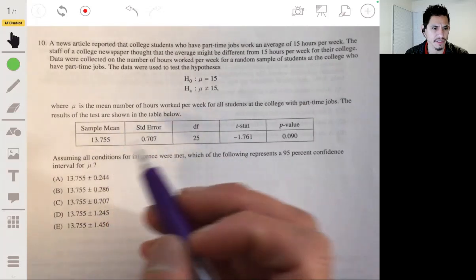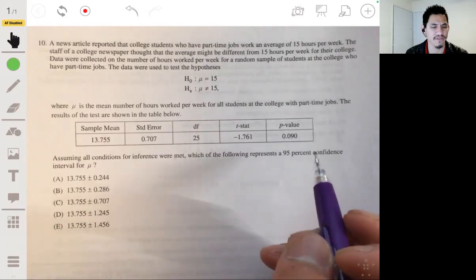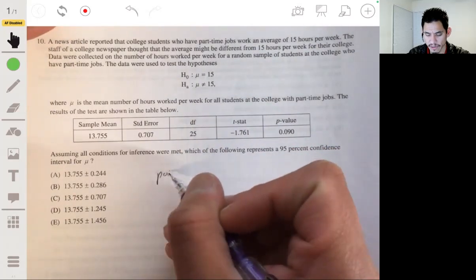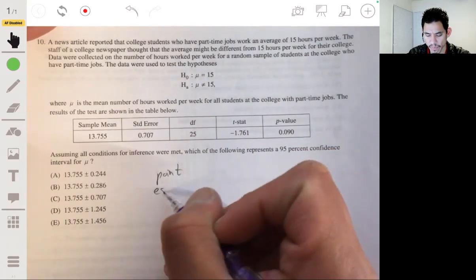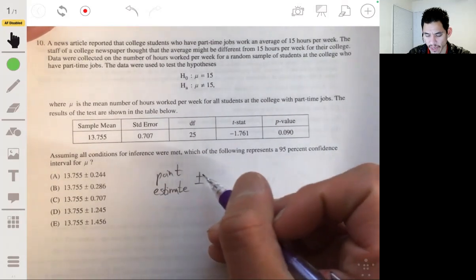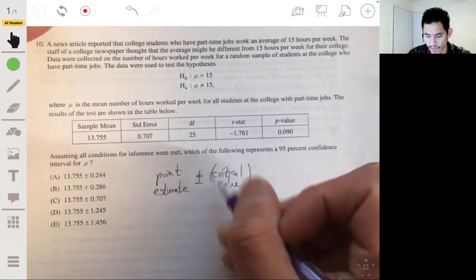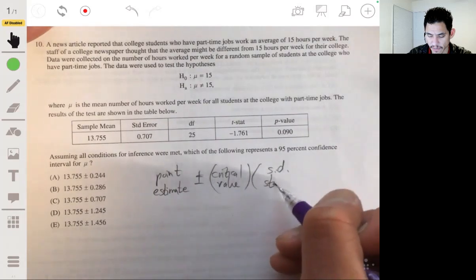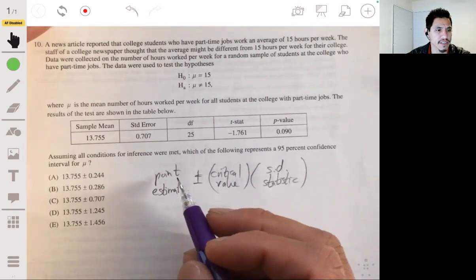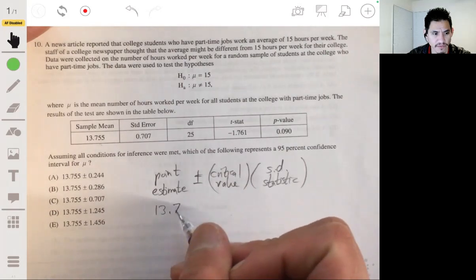Okay. So here's our data, or here's our statistics, I guess. Assuming all conditions for inference are met, which of the following represents a 95% confidence interval for mu. Okay. So remember, this will be our point estimate. When you make a confidence interval, we start with the point estimate plus or minus our critical value times the standard deviation of the statistic.